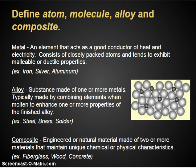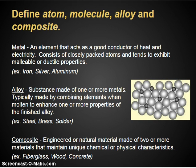Metals typically don't exist very long in their pure state because they oxidize very quickly, so alloys are a combination of metals that often prevents them from breaking down. Composites are engineered or natural materials made of two or more materials that maintain unique chemical or physical characteristics. For example, a man-made composite would be fiberglass — fibers that are a textile bonded together with ceramics. Wood is a naturally occurring composite with fibers and a lignin matrix that locks everything together. Concrete is another example, containing cements, aggregates, and sands mixed together to give it strength and structure.